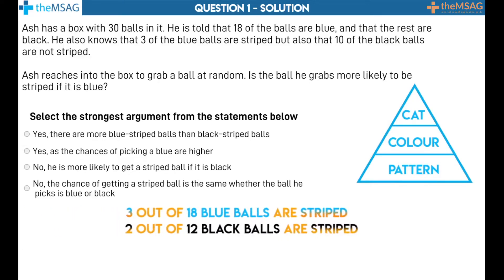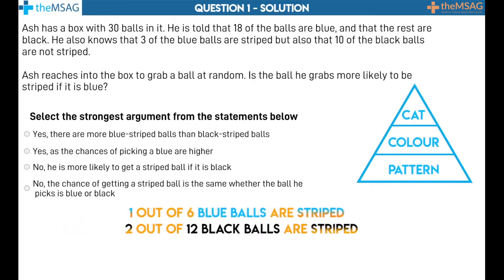Now to look at the question. It asks us: is the ball he grabs more likely to be striped if it is blue? We have our two fractions: 3 out of 18 blue balls are striped and 2 out of 12 black balls are striped. To simplify, we must divide both parts of each fraction by any number they have in common. 3 and 18 both have the number 3 as a common factor, so dividing by 3 gives us 1 out of 6 blue balls are striped.